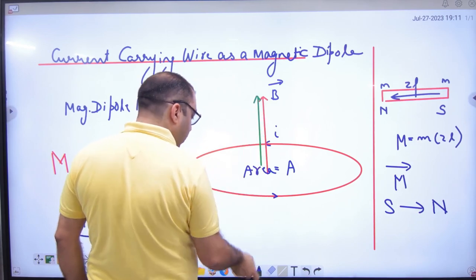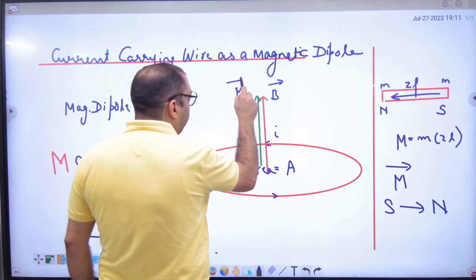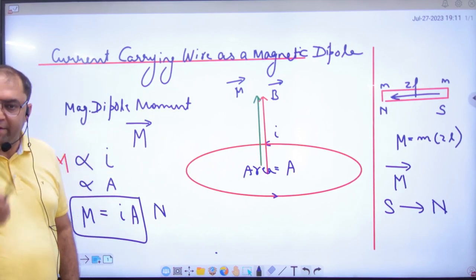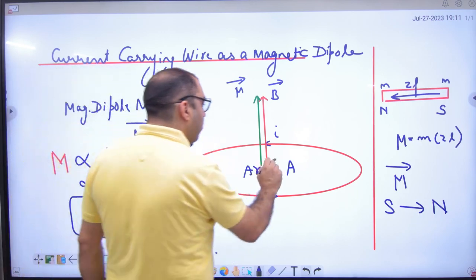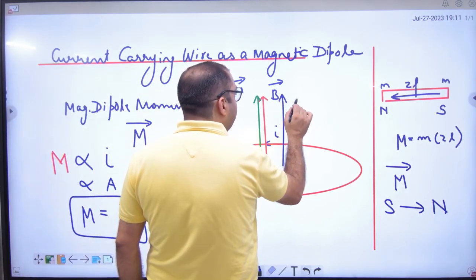B-vector will be there. So B-vector and M-vector will be in the same direction.